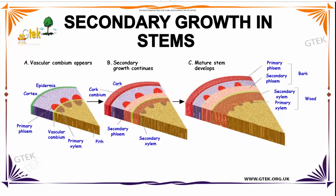The final stage is Mature Stem Develops. It consists of both Primary Phloem, Secondary Phloem, Primary Xylem, and Secondary Xylem. This is called Wood.